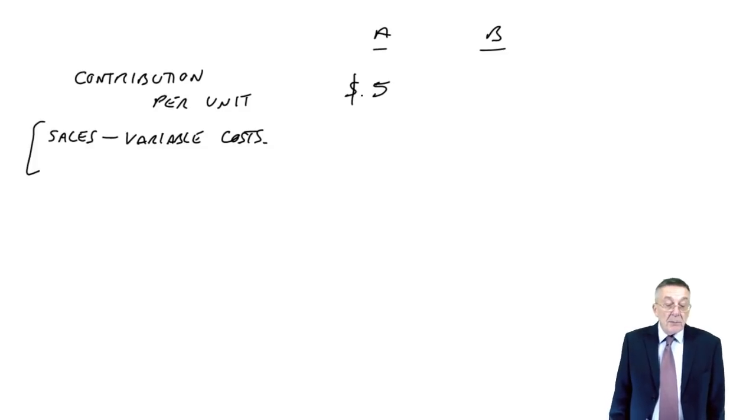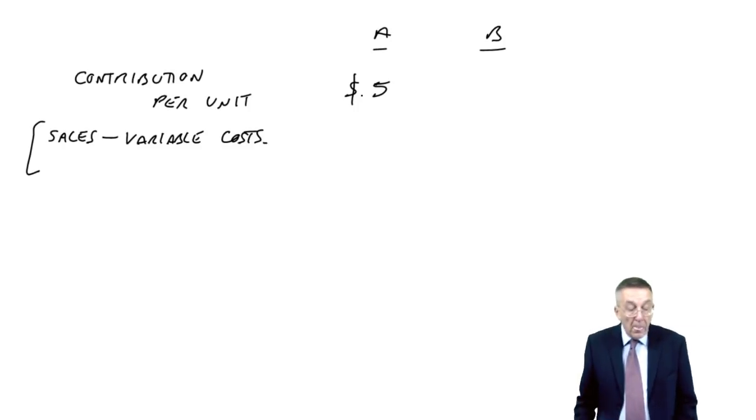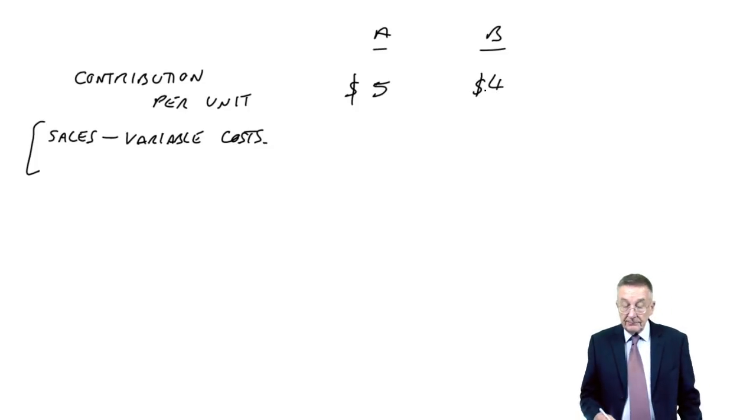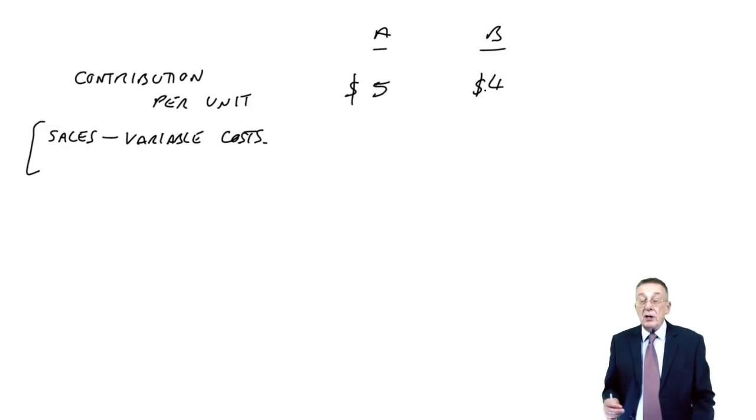And similarly B, selling price $28, the variable costs materials, labor, and other variable is $24. So it's generating $4 per unit. Sales less variable costs.